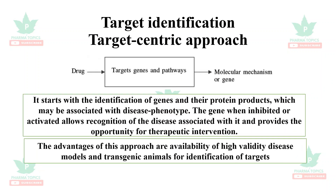The target-centric approach: the drug may target the genes or genetic pathways, through which the molecular mechanism or genetic aspect of the drugs could be understood. It starts with identification of genes and their protein products associated with the disease phenotype. When the gene is inhibited or activated, it allows recognition of a disease associated with it and provides the opportunity for therapeutic intervention. Advantages include availability of high-validity disease models and transgenic animals for identification of targets.